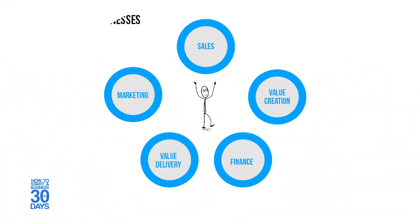To recap the five parts: one, marketing — how you create awareness and get people to your business; two, sales — how you convert those marketing efforts into customers; three, value creation — how you actually create value (we'll also cover the 12 forms of economic value); four, value delivery — how you take that value and get it to a customer; and five, finance — because if a business isn't generating revenue, it's not a business. These are the five basic parts, and understanding them will make you much more powerful in how you approach your business.